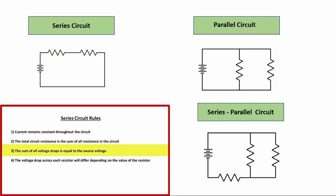Rule number three states that the sum of all voltage drops is equal to the source voltage. In a series circuit the resistors share the voltage. So if the source voltage was 12 volts, the two resistors would share it, and if we added up the two voltages used by those two loads, it would equal the source voltage.